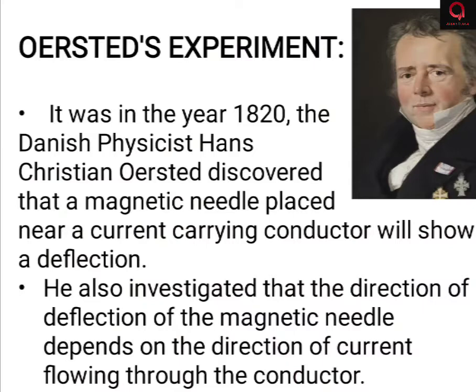We know that a magnetic compass or magnetic needle shows deflection in the presence of a magnetic field. Since a current-carrying conductor caused a nearby magnetic needle to deflect, it is clear that a magnetic field is produced around that conductor. Oersted also investigated that the direction of deflection depends on the direction of current — reversing the current reverses the deflection.